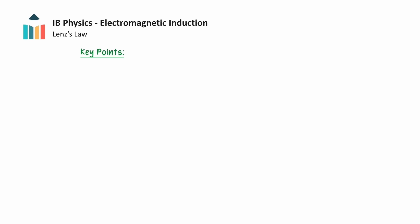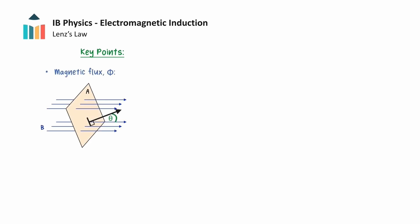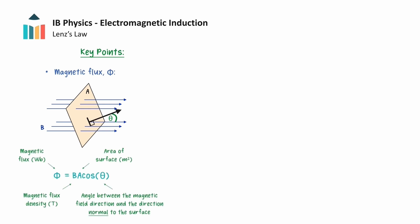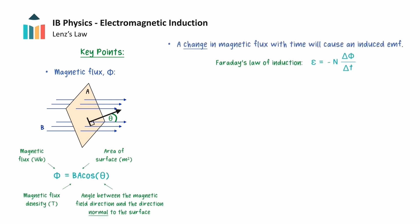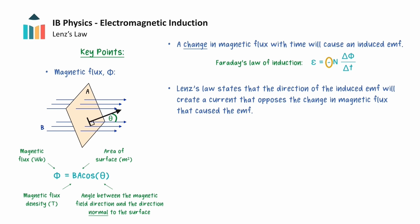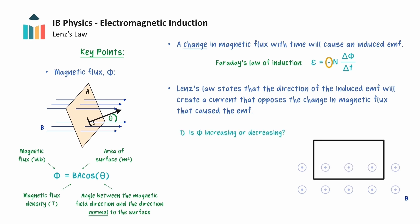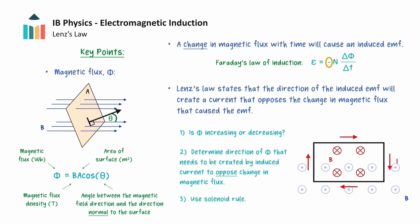We will now provide a final summary of the key understandings from this video. Magnetic flux is a quantity that measures how much of a magnetic field passes perpendicularly through a given area, and it can be calculated with the equation phi = BA cos(theta). When there is a change in magnetic flux with time, an EMF will be induced as given by Faraday's law of induction, and if a closed loop is formed, then a current will also be induced. The negative sign in Faraday's law encompasses Lenz's law, which states that the direction of the induced EMF will create a current that opposes the change in magnetic flux that caused the EMF. Finally, we gave a 3-step process that can be used to determine the direction of the induced EMF, where we note that the correct direction will conserve energy. This concludes this video on electromagnetic induction and Lenz's law. Thank you for watching.